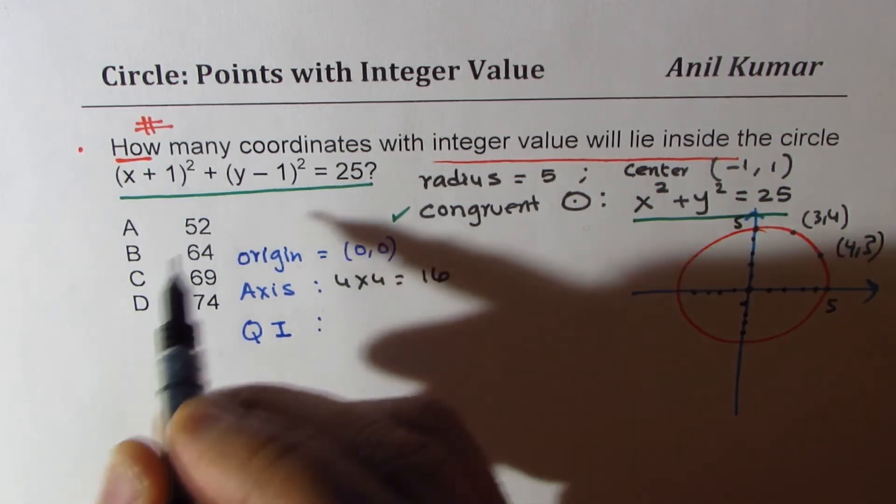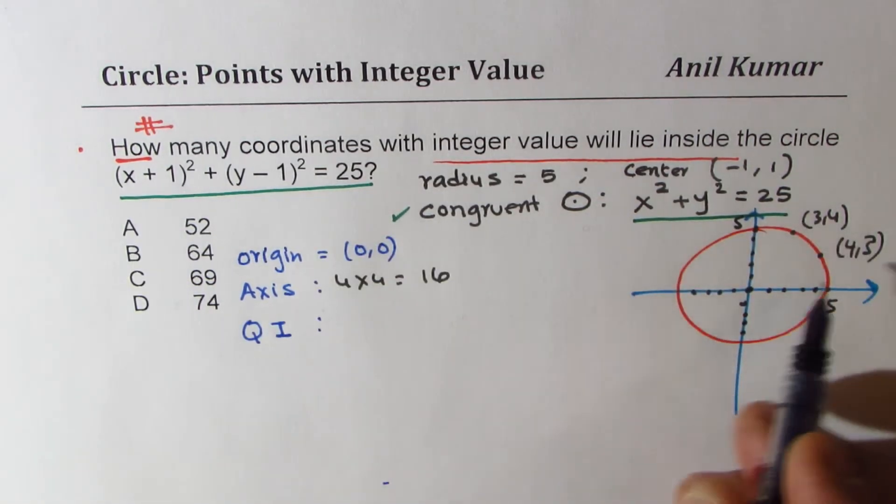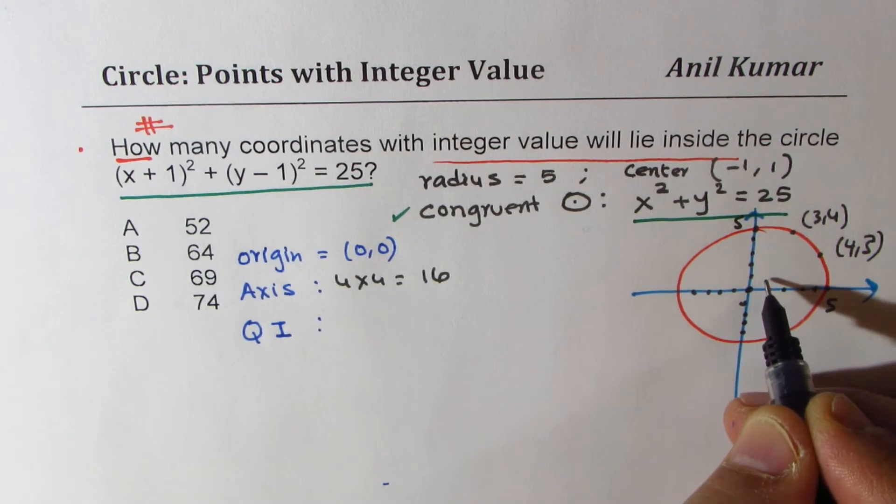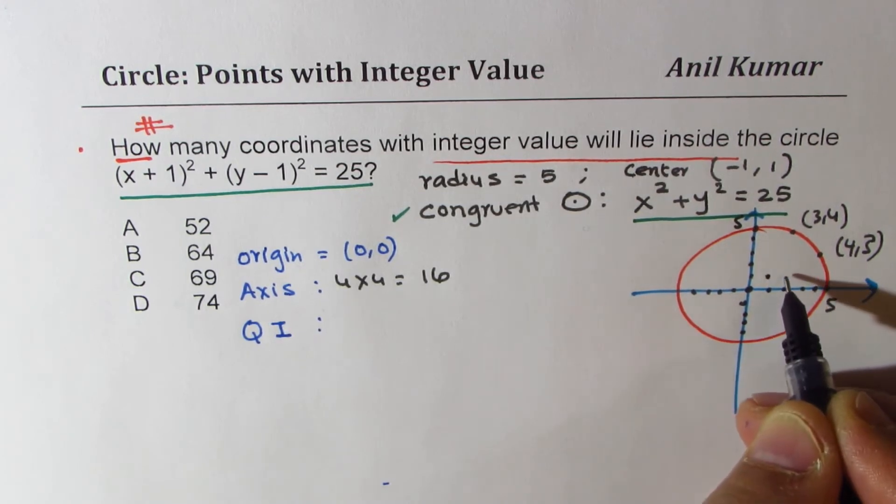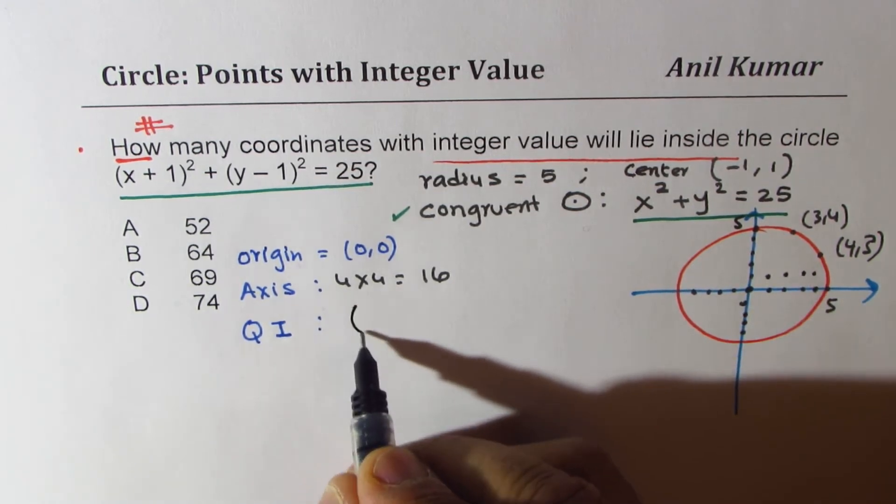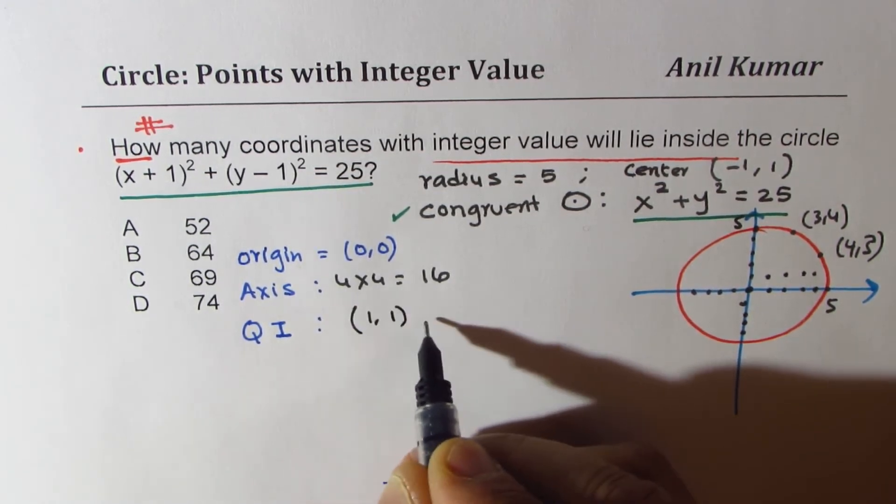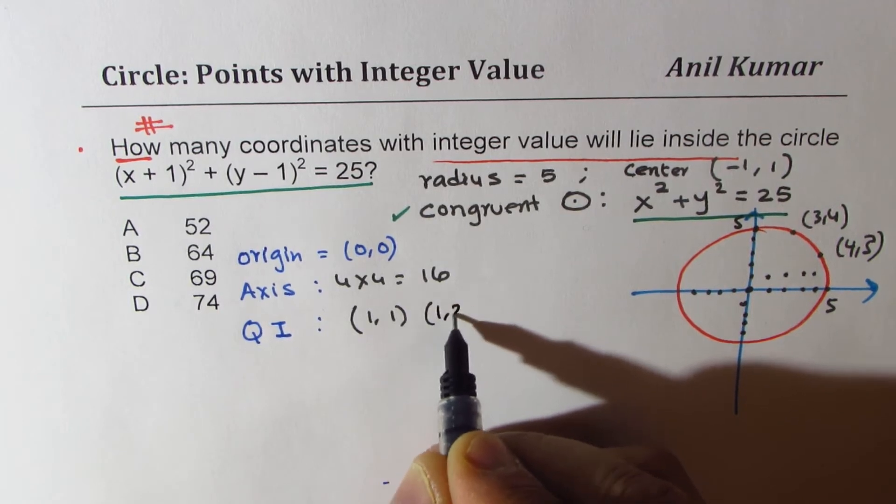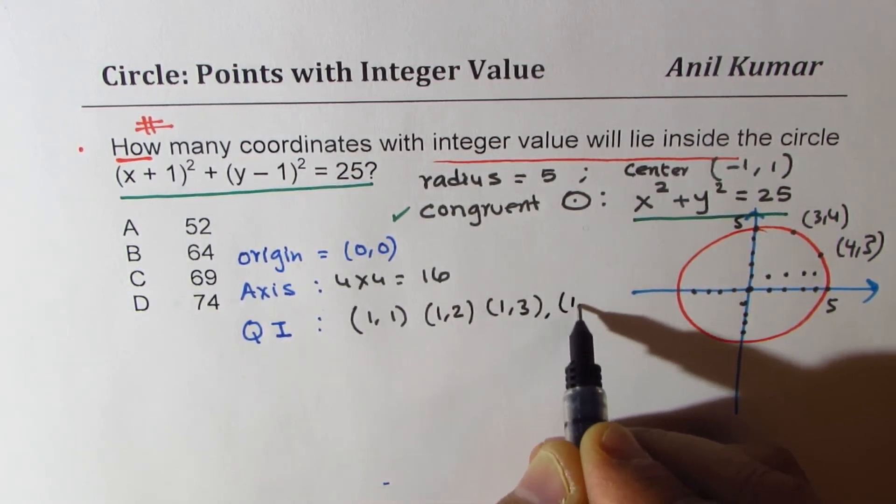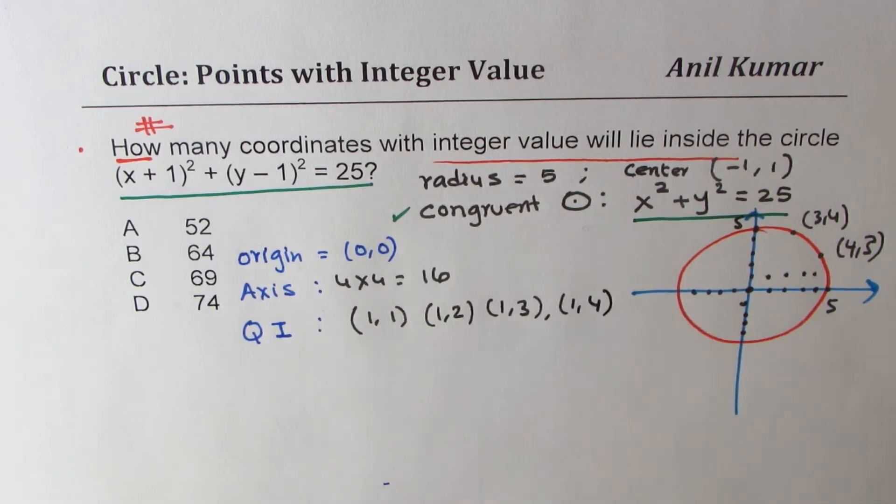So circle has both symmetry. It is both even and odd symmetry. So this point, for example, will be (1, 1), then (1, 2), (1, 3), and (1, 4). So let's start listing them for the ease of understanding. So (1, 1), then we have (1, 2), (1, 3), and (1, 4). (1, 5) will move out.